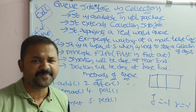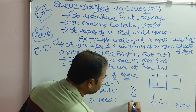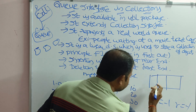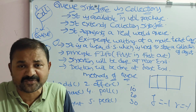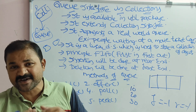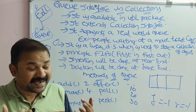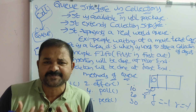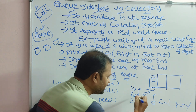Initially, front and rear both point to minus one, meaning the queue is empty. When we insert 10, rear is incremented from -1 to 0, and 10 is placed there. Front also points to 0 as the beginning of the queue. For the next insertion of 20, rear increments to 1. Front remains at 0. Then inserting 30 increments rear to 2, so front is at 0 and rear is at 2.